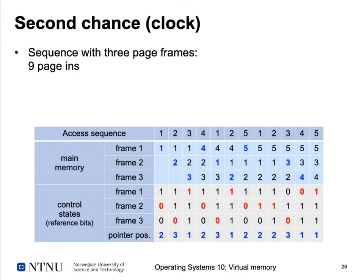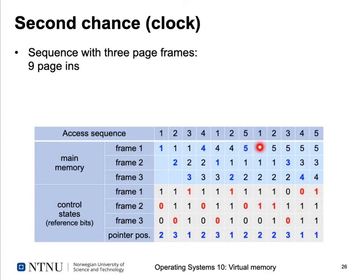The pointer remains at its current position, but the hardware has changed the reference bit at the page-1 frame from zero to one. For a request for page 2 — still in memory — its reference bit is updated. All reference bits are one again. For page 3 we must go through all of them, set them to zero, then replace the one at zero, load page 3. For page 4 we repeat the process, and when page 5 is accessed and already in memory, we just set its reference bit to one.